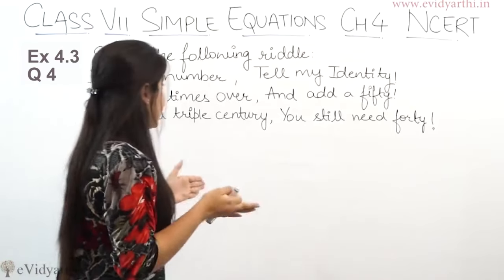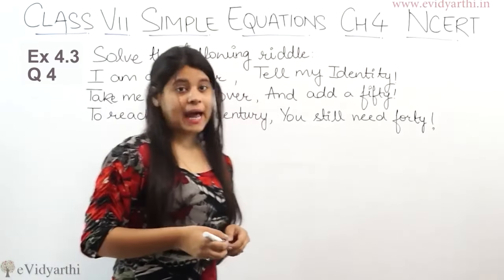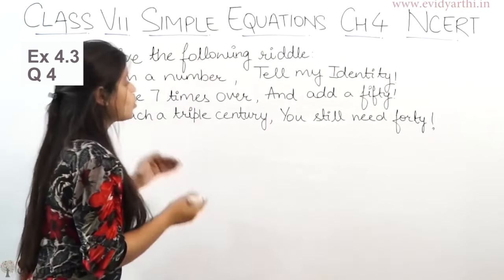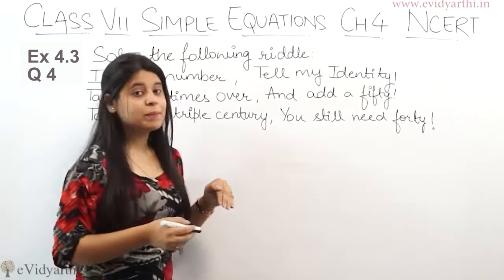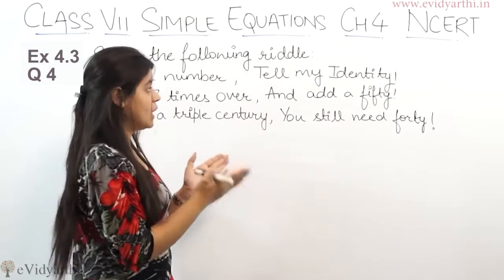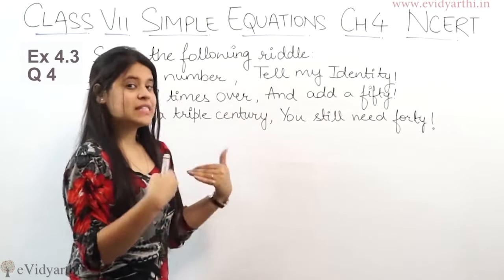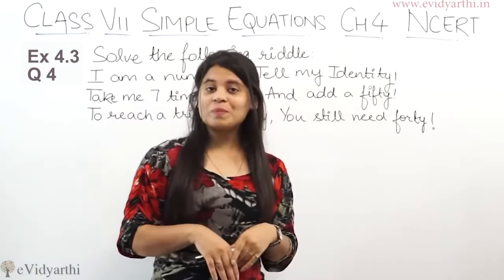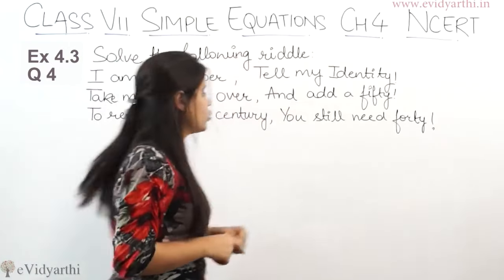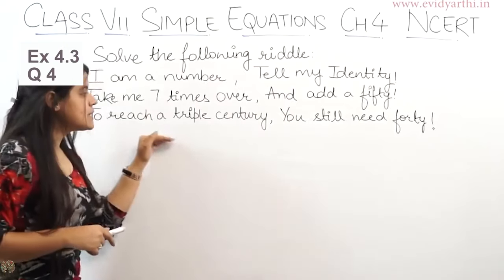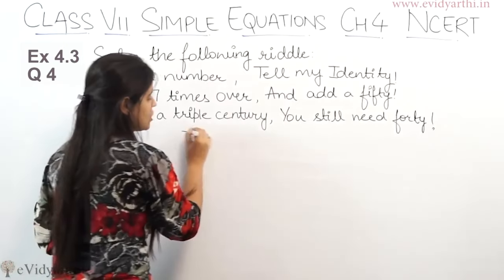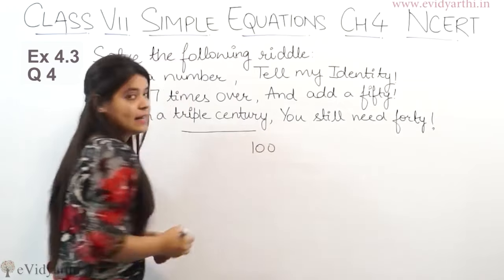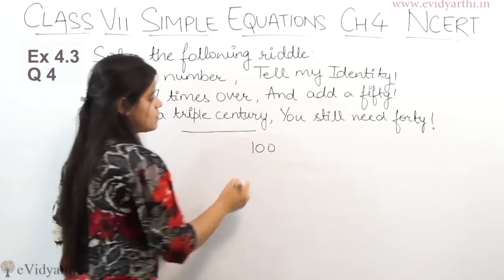I am a number, tell my identity. I am a number and my identity, tell my identity. Take me 7 times over. 7 times over means my number is 7 times. Add a 50 and add a 50, and then 50 add to reach a triple century. Triple century means century means 100, then triple means 3 times.